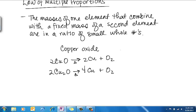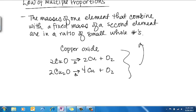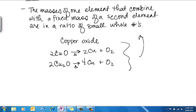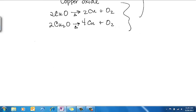I want to consider what this means in light of this law of multiple proportions. So I want us to consider two different copper oxides. We'll call them copper oxide A and copper oxide B.